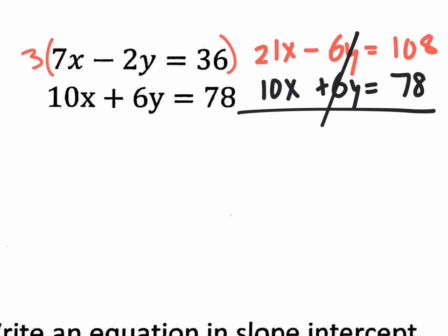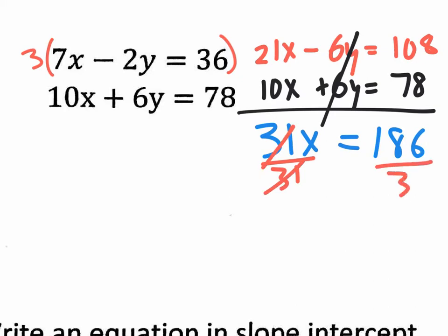The Y's cancel. There's no more Y's. We have 21 plus 10, that will be 31X. And all of a sudden I'm not feeling that comfortable. But 108 plus 78 is 186, correct? 186. And now we're supposed to divide by 31. And I'm not feeling good. X equals, of course, we could use calculators. And thank goodness that the answer is six.